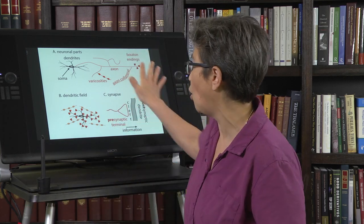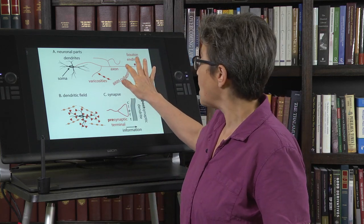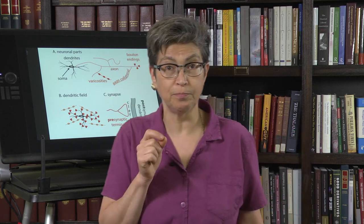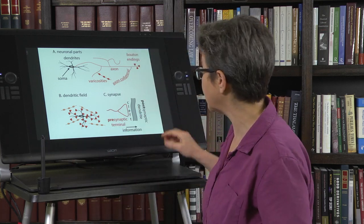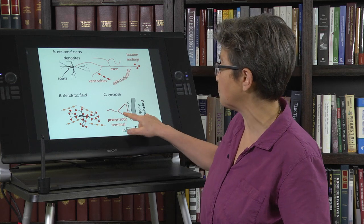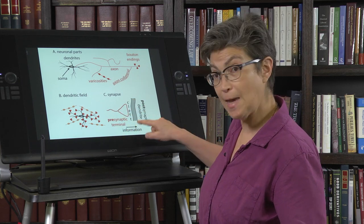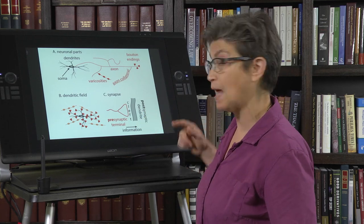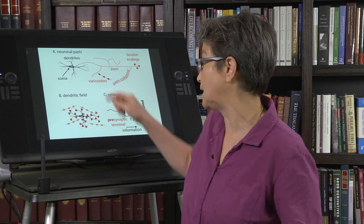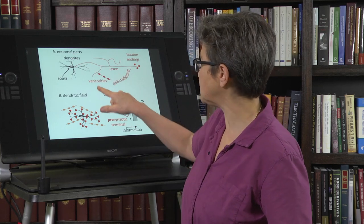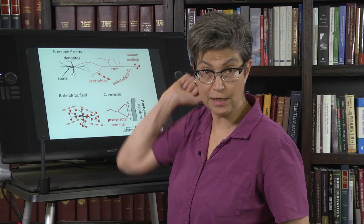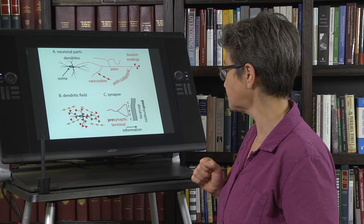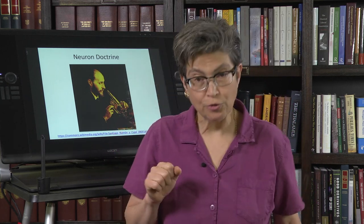The axon has on it what are called synaptic terminals, which can come in a variety of morphologies. The synaptic terminal is a very important place — it is where communication takes place between one cell and another. In a classic synapse, you have a presynaptic terminal, a separation, and then a postsynaptic element, which is typically a dendrite. So information is typically going from the axon to the dendrites.